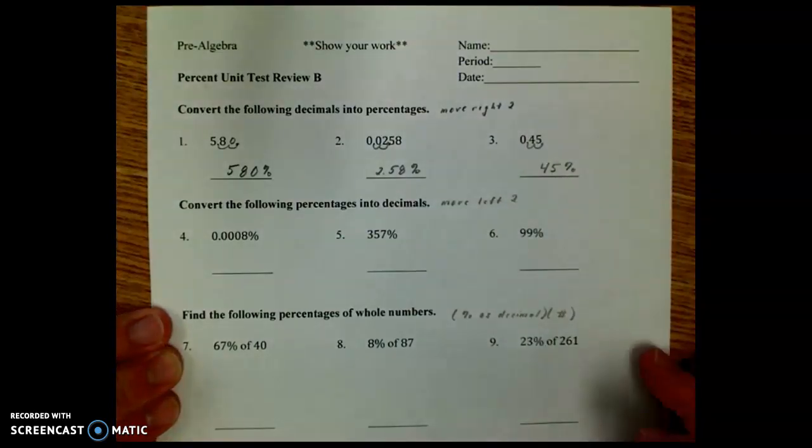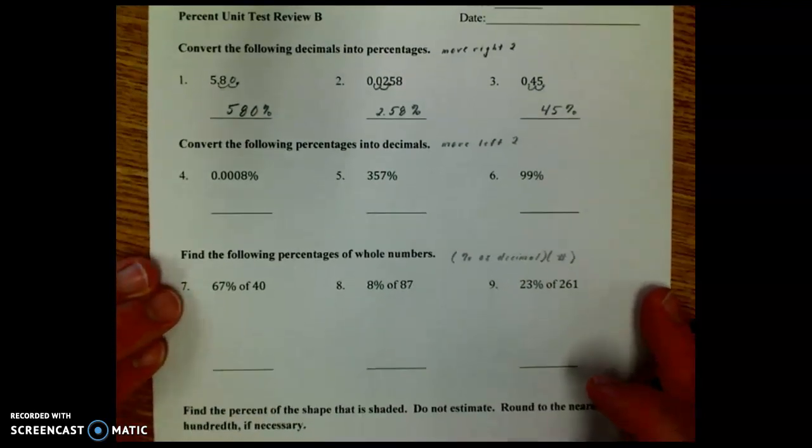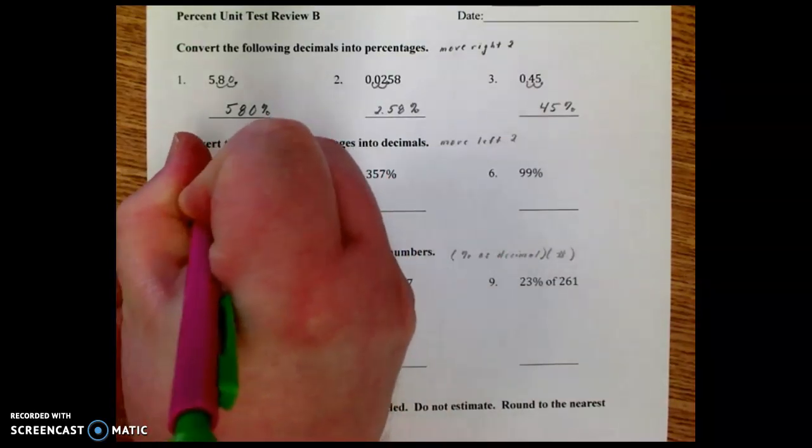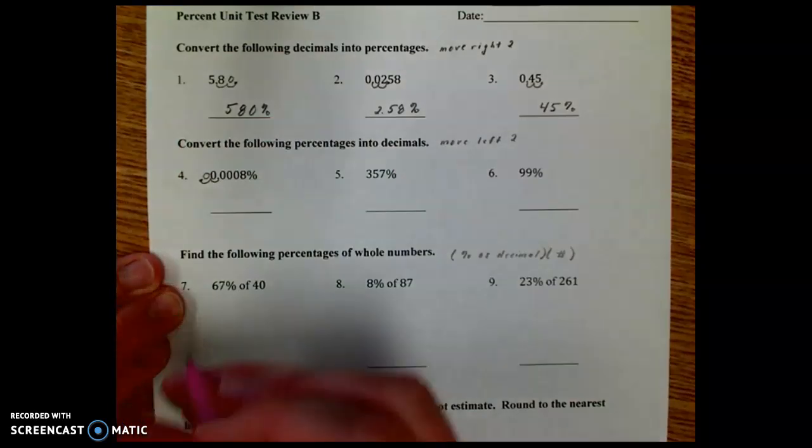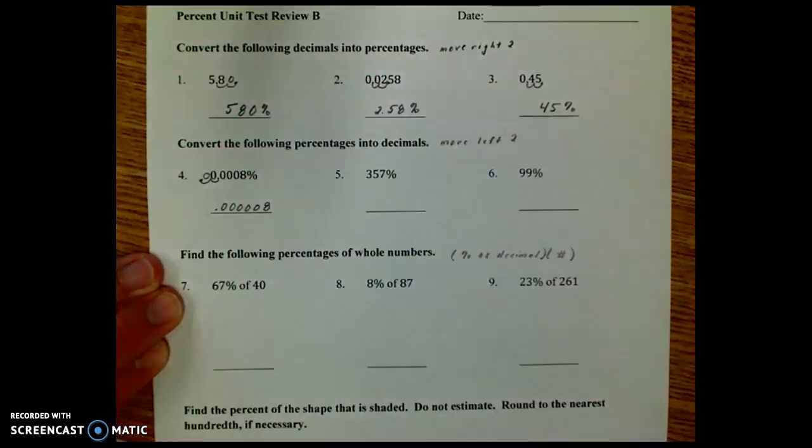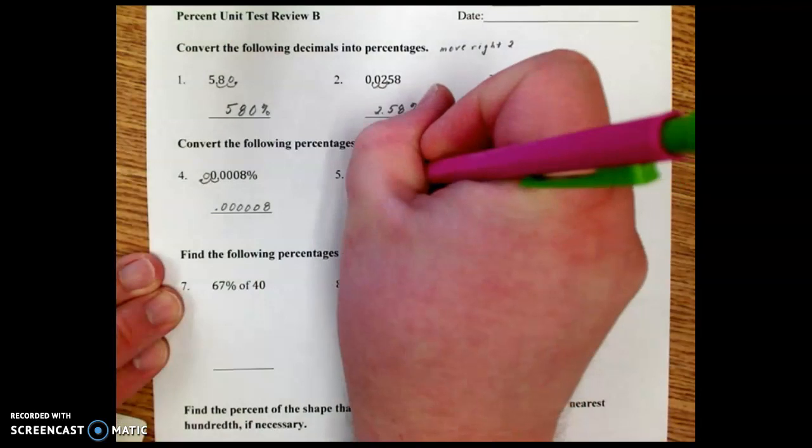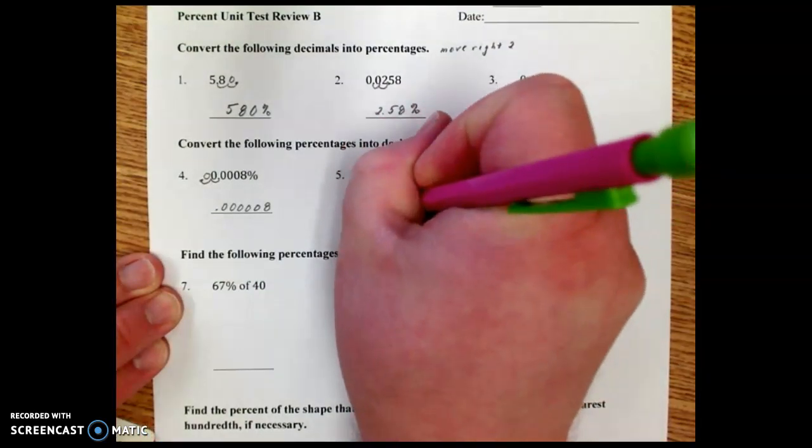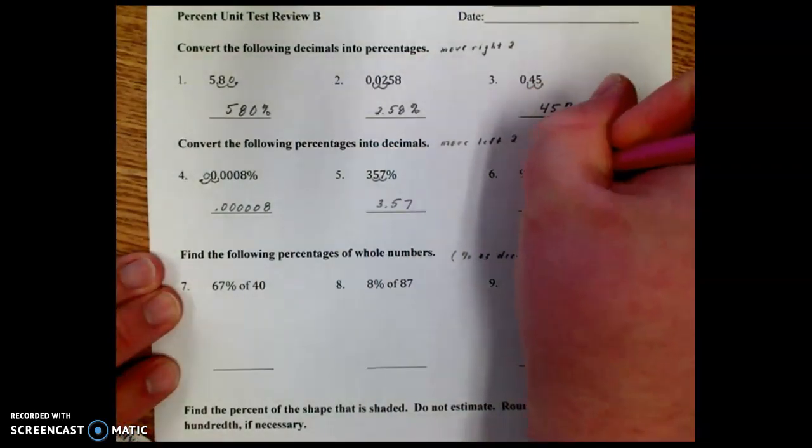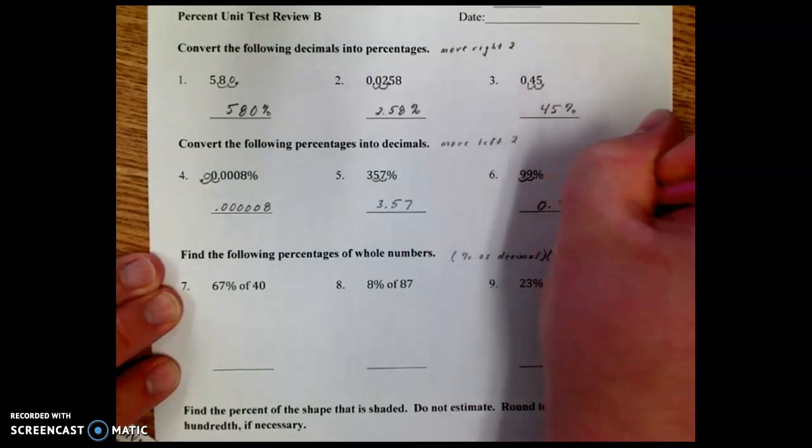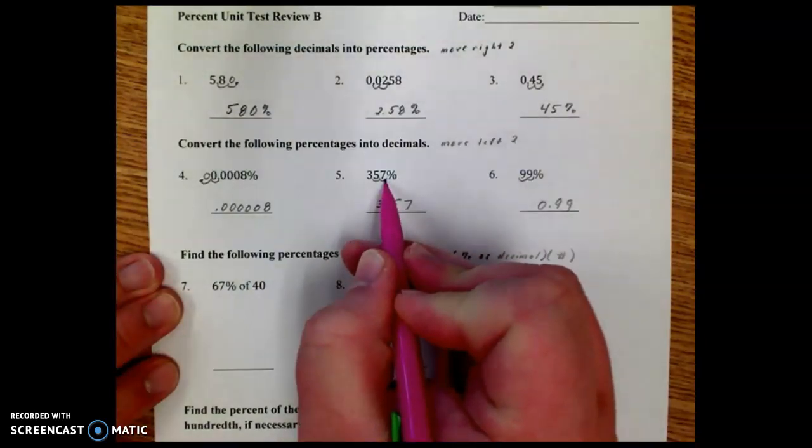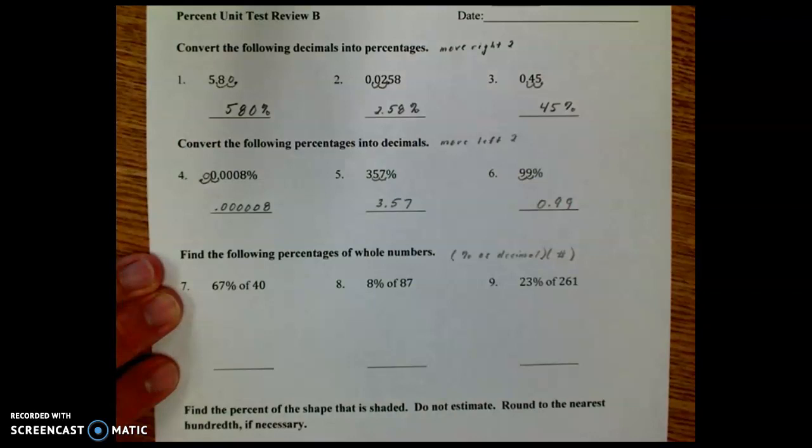The next section says convert the following percentages into decimals. Now we move left two. So here, one, two. We have to be very careful with all the zeros. That would be .00008. Here, one, two, that would be 3.57. And 99, one, two, that would be 0.99. Remember that with whole number percents, the decimal is at the end of the problem, even though it's not written there, at the end of the number.